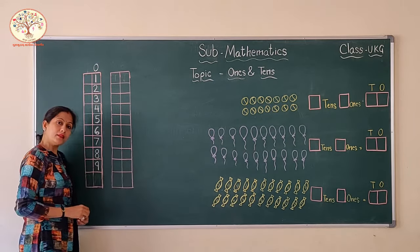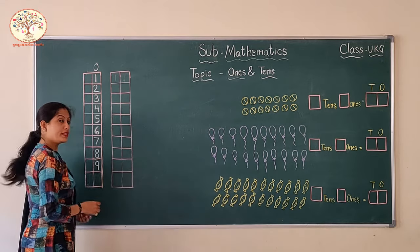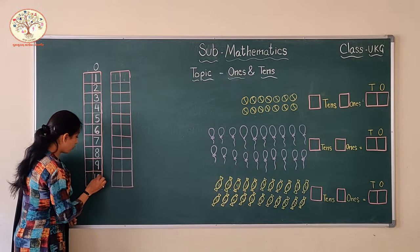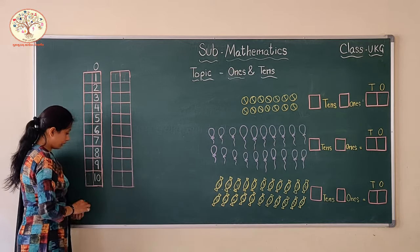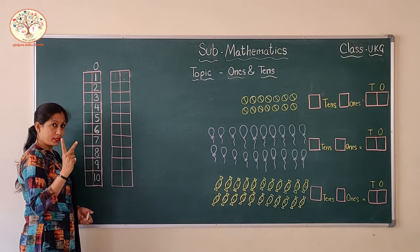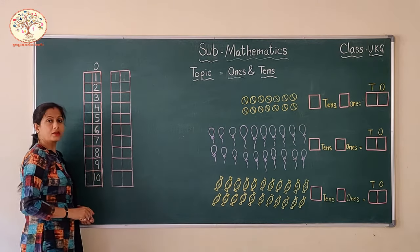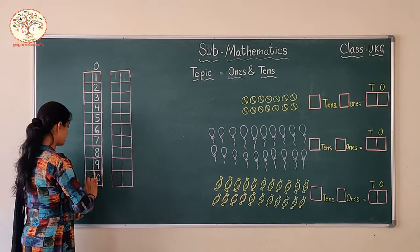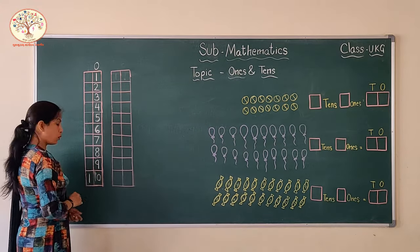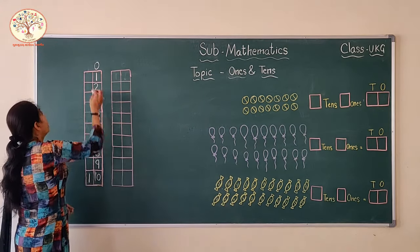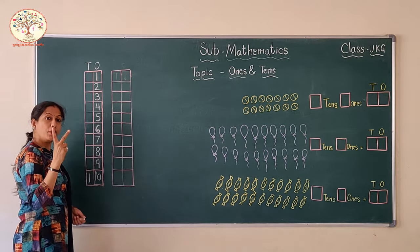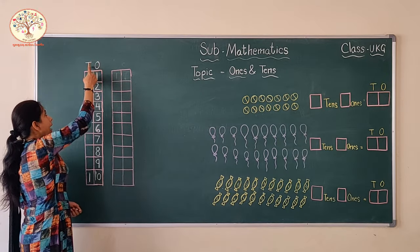What comes after 9? 10. 1, 0 — 10. 10 is a 2-digit number, it has 2 digits. But the 1s house is very small — 2 digits can't stay there. So this one needs a new house. Its new house is the 10s house. Now we have 2 houses: 1s and 10s.